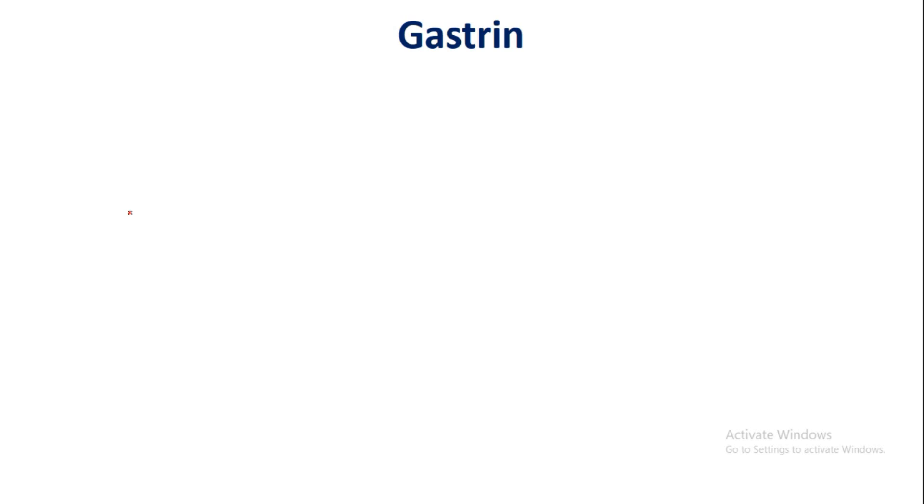Gastrin is a hormone — a substance secreted by different cell types directly into the blood. Gastrin is released from the G cells of the stomach directly into the blood, and via the blood it again acts on the stomach.